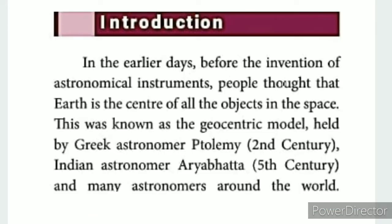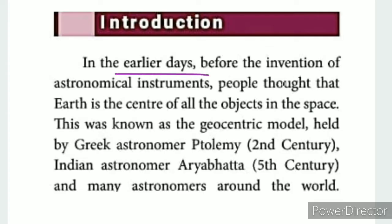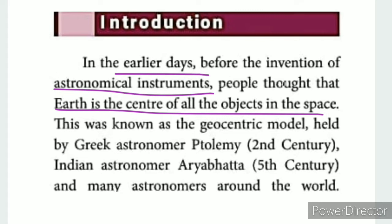In the first model of the universe, the earth is considered the center of all objects in space. This is called the geocentric model. 'Geo' means earth, so in this model the earth is at the center.